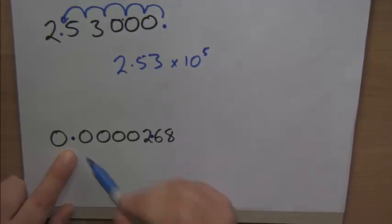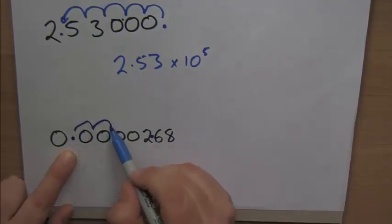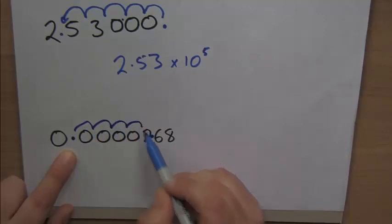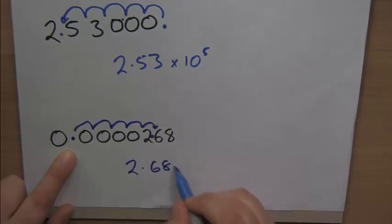How many jumps has that done? That's 1, 2, 3, 4, 5 jumps. So we're going to put down 2.68 times 10 with the 5.